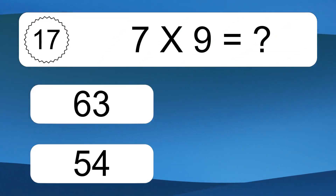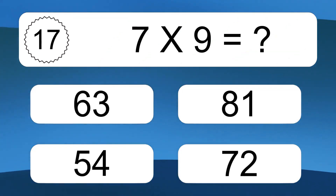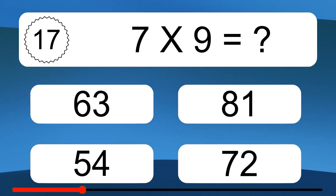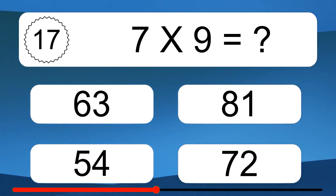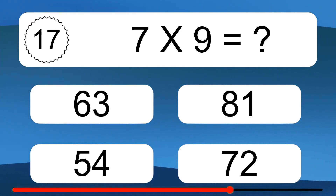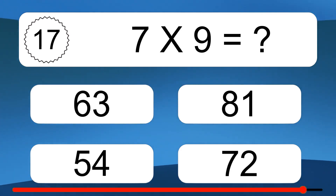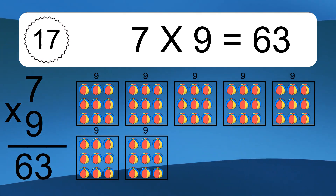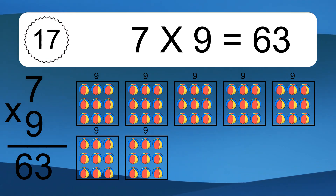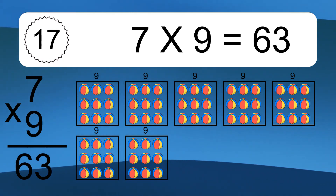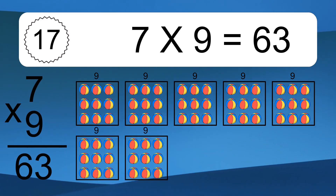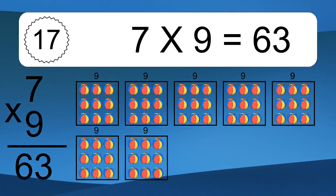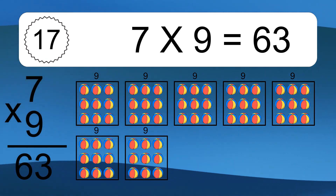Seven times nine equals what? Seven times nine equals 63. We have seven boxes, and each box has nine colorful balls inside. If you count all the balls in all the boxes together, you will have 7 times 9 balls. This equals 63 balls.